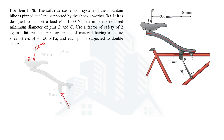Another force in terms of this rod is acting which makes an angle of 60 degrees with the horizontal — this is the FBD force. For point C, we don't know the exact direction, so let's resolve it into its horizontal and vertical components, naming them FCX and FCY.